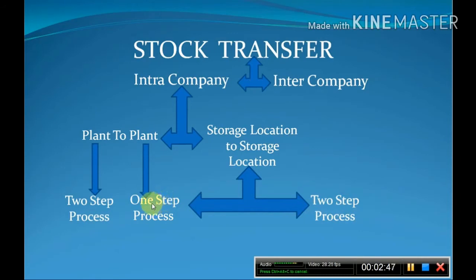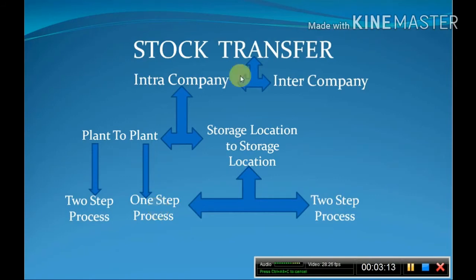In the one-step process, a certain quantity of a specific material is requested by the person in charge of one storage location to be transferred to another storage location. For this we can use T-code MB1B and the movement type will be 311.